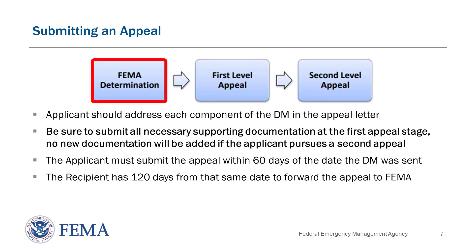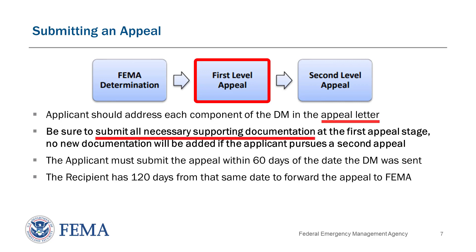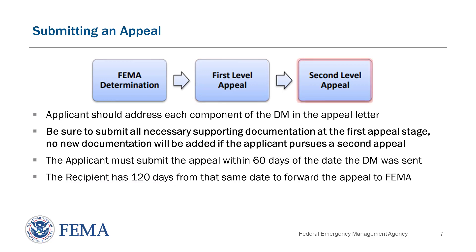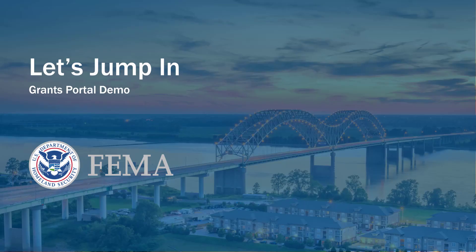After the determination memo has been officially issued, the applicant will have the option to submit an appeal within 60 days of the date the DM was sent. The applicant should address each component of the DM in the form of an appeal letter and submit all information necessary to support the appeal. The recipient has 120 days total to forward the appeal to the FEMA Regional Administrator or Assistant Administrator, starting on the same day as the applicant's 60 days. If the applicant chooses to pursue a second appeal, no new documentation can be added, so be sure to submit all supporting documentation at the first appeal stage.